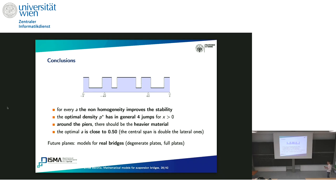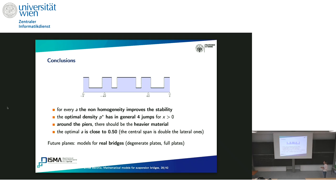In order to reach something more realistic, we need to extend a similar approach to more realistic models. All the results I have so far presented go in the direction of increasing the critical threshold of the wind velocity at which this form of instability arises. Another possible approach could be that of playing directly on the fluid velocity, but as I have already explained, this requires models involving Navier-Stokes equations.